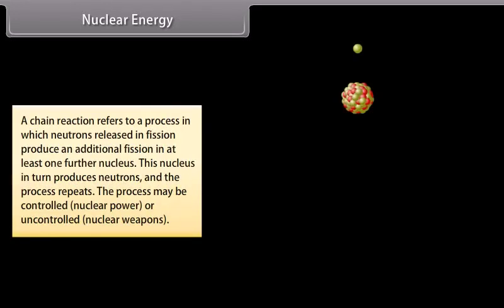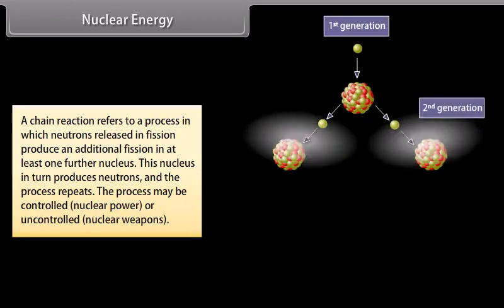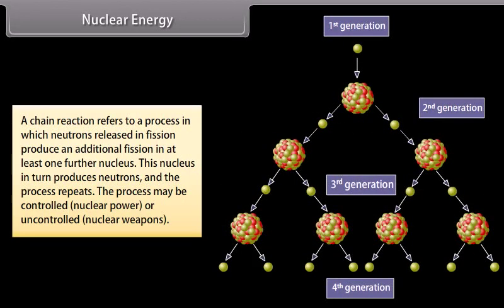A chain reaction refers to a process in which neutrons released in fission produce an additional fission in at least one further nucleus. This nucleus in turn produces neutrons, and the process repeats. The process may be controlled or uncontrolled.